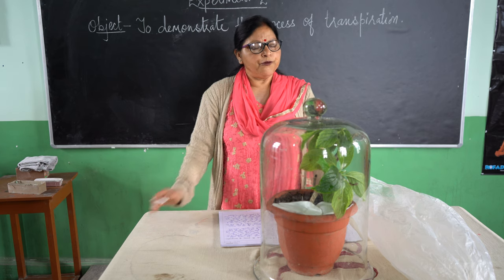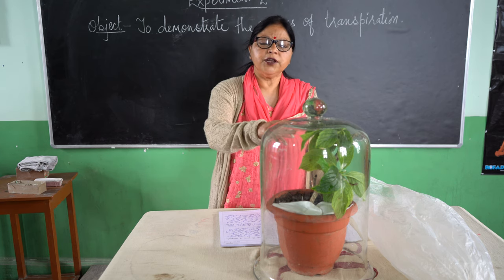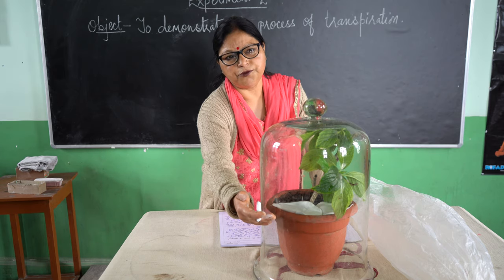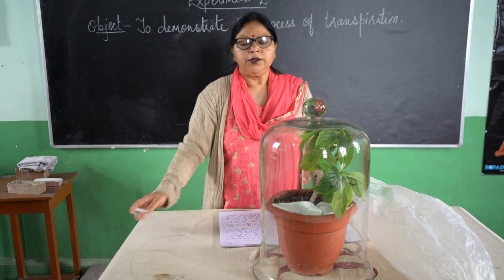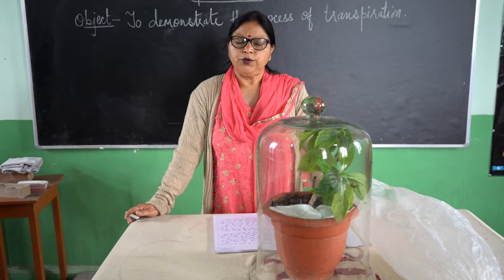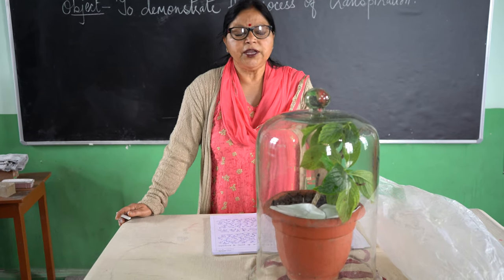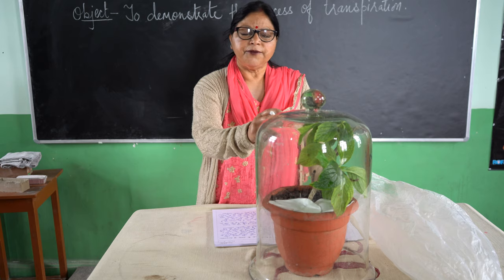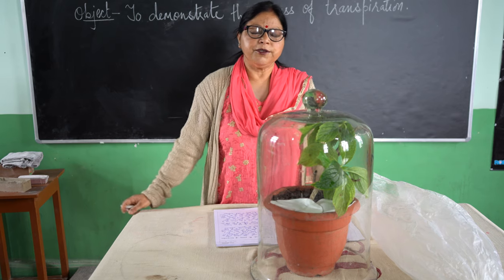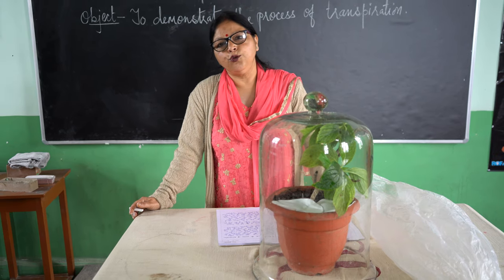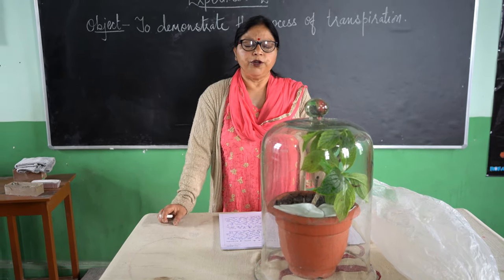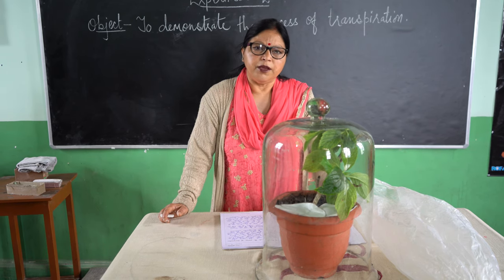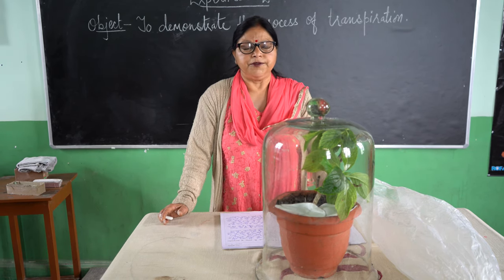This water has come from the aerial parts. As you can see, the soil has been covered, so water cannot come out from the soil. It has definitely come out from the surface of the leaves. This is a very important process by which plants lose water in the form of water vapor from their aerial parts — that means from the leaves.